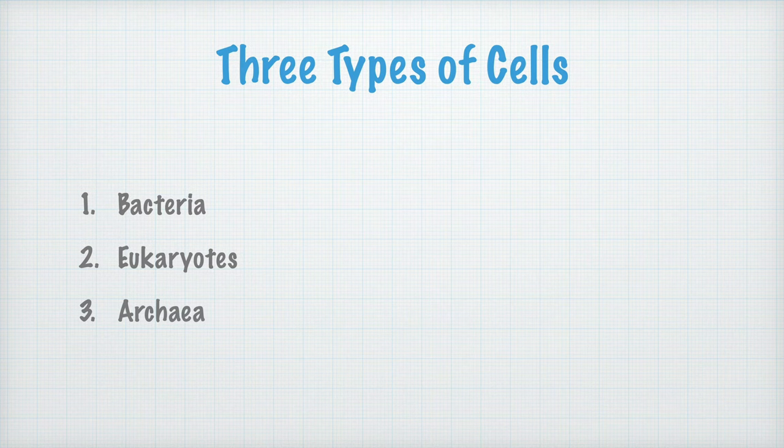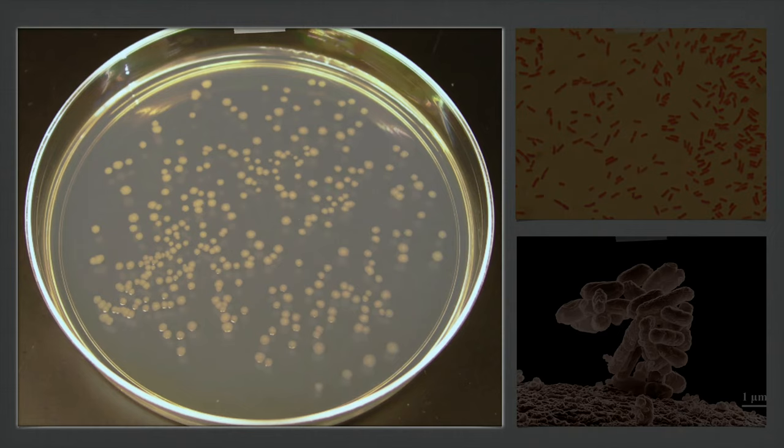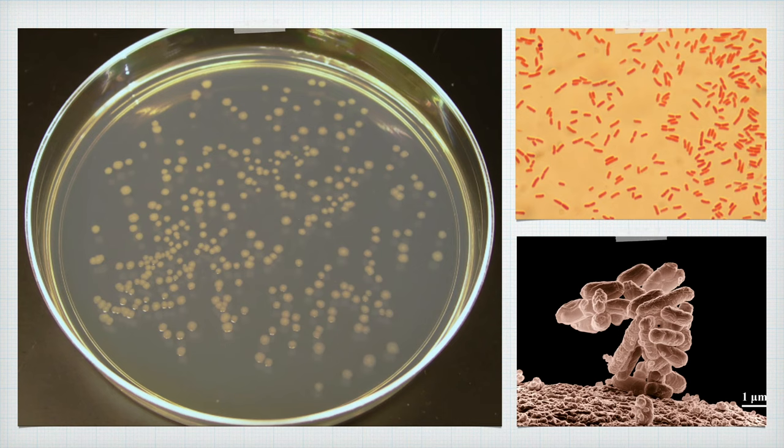Let's start by looking at some bacterial cells. On this agar plate, you can see a whole lot of bacterial colonies. Agar is a kind of nutrient on which you can grow bacteria, and each colony here consists of millions of bacterial cells. These bacteria are of a non-dangerous type called E. coli, a type of bacterium commonly found in our intestines.